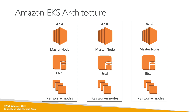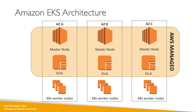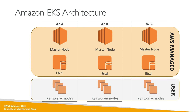EKS came in and said Amazon is going to manage all your master nodes and your etcd, and handle all the load. They will scale these services as needed and repair them as needed. So Amazon manages the master nodes and etcd for you — you don't have to worry about those. As a user, you still have to create your Kubernetes worker nodes, but you just join them into the control plane.